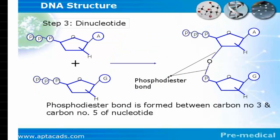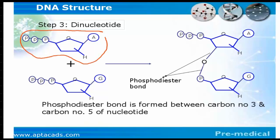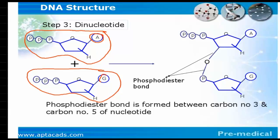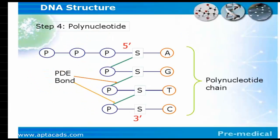In step three, a dinucleotide is formed when two mononucleotides join together via a phosphodiester bond. The phosphodiester bond is formed between carbon number three and carbon number five of the nucleotides. For the formation of a polynucleotide, mononucleotides keep adding to the existing dinucleotide via phosphodiester bonds, and the chain keeps growing to form a polynucleotide chain.